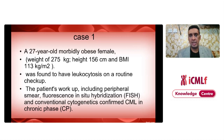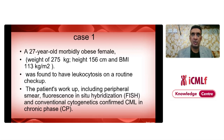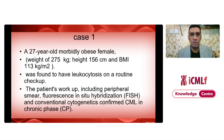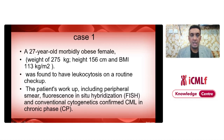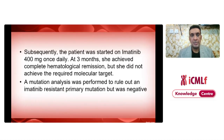We now move to a real-world case of morbid obesity. This is a 27-year-old morbidly obese female weighing 275 kilograms, height 156 centimeters, and a body mass index of 113 kg per meter square. She was found to have leukocytosis on routine checkup, and workup including peripheral smear, FISH, and conventional cytogenetics confirmed chronic myeloid leukemia in chronic phase. She was started on imatinib 400 mg once daily.